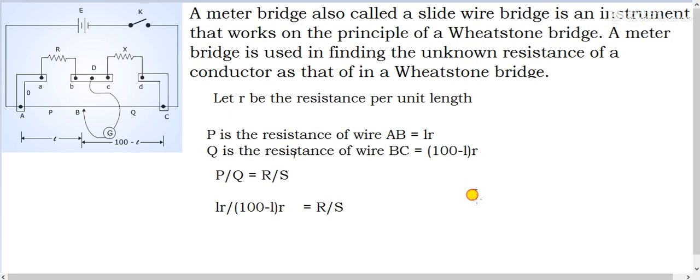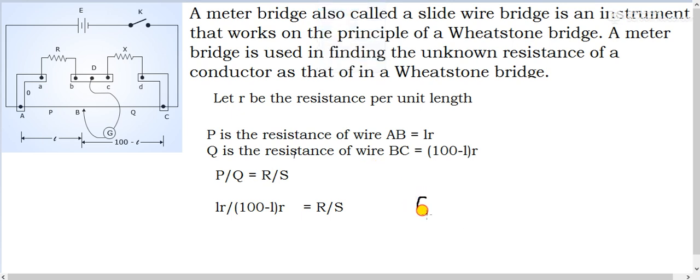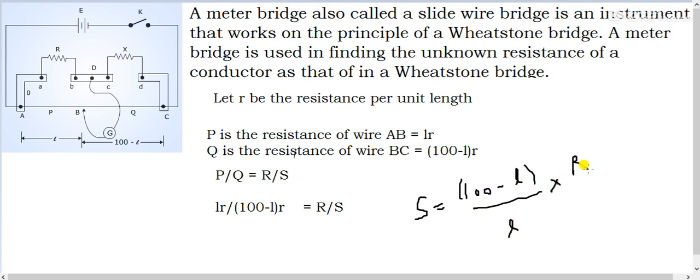Rearranging, S goes to one side and (100 − L) comes to the numerator, giving the final formula: S = [(100 − L) / L] × R. This is the formula for finding unknown resistance using a meter bridge. You just find the balancing point — where the galvanometer shows no deflection — and apply this formula. This derivation is also required for the practical lab.